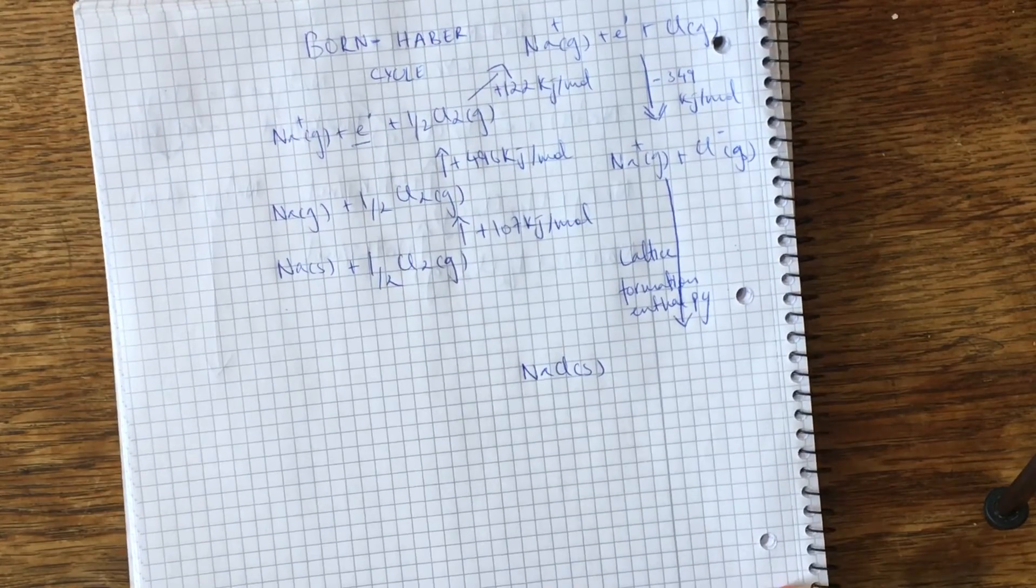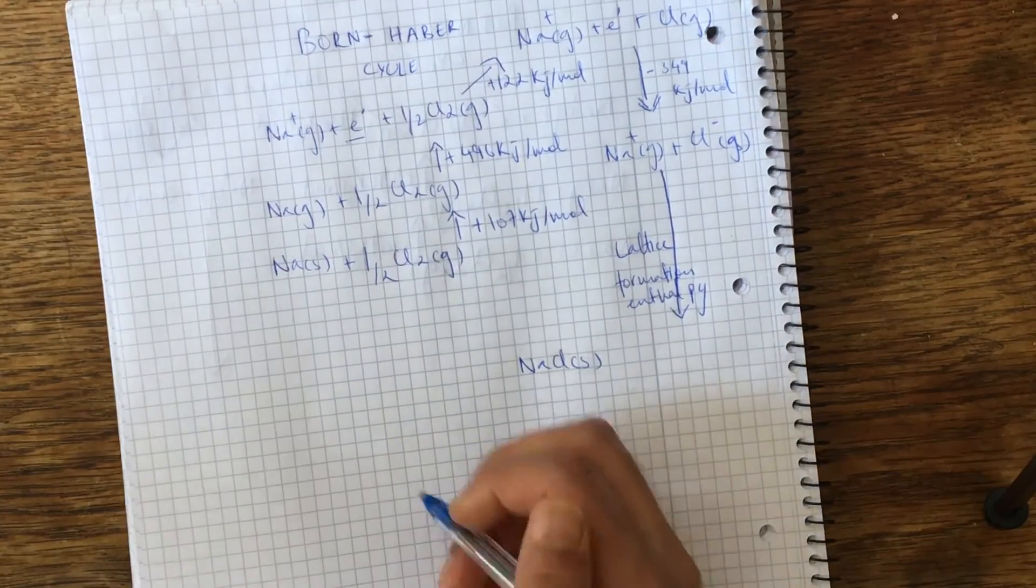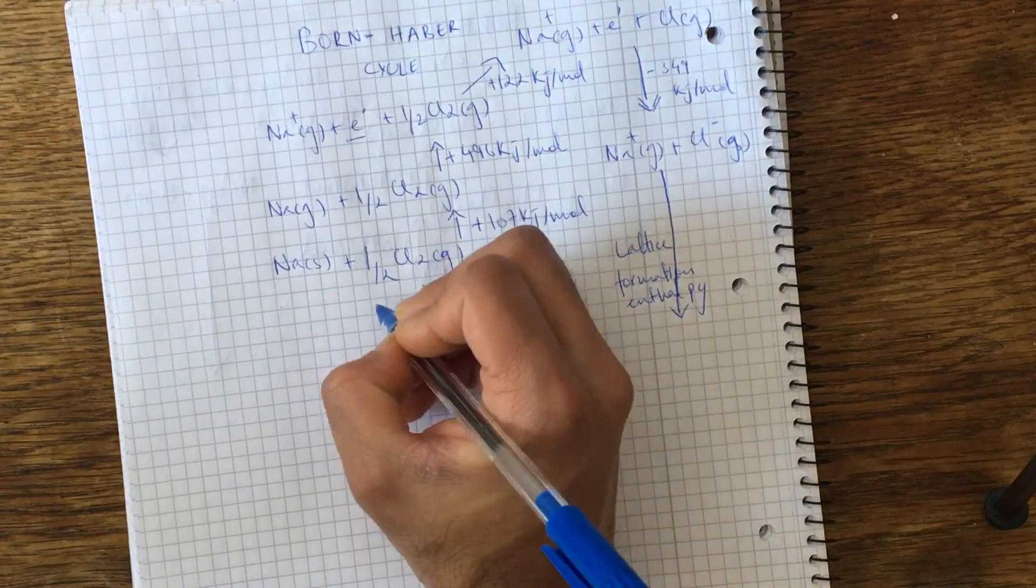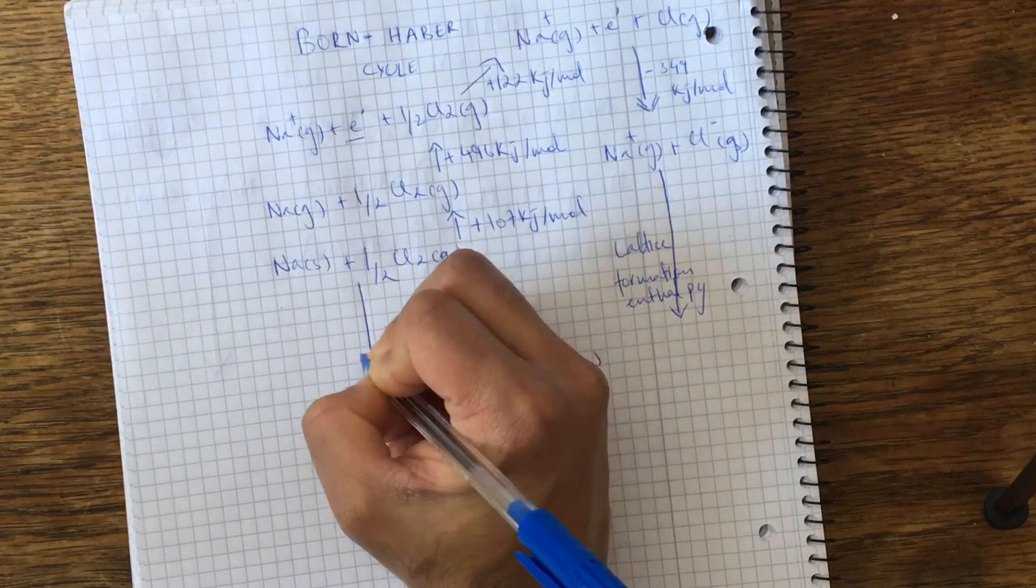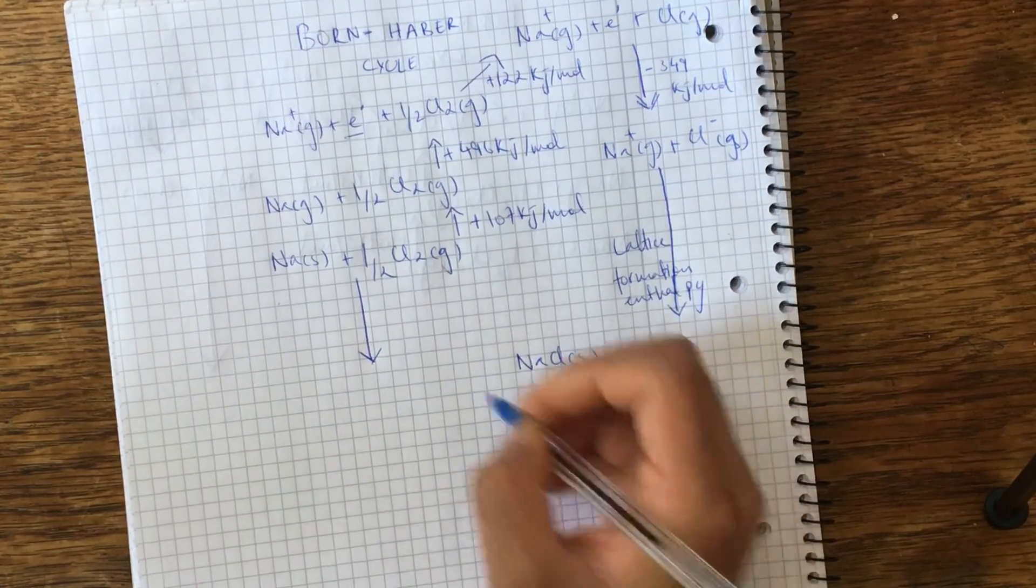So basically, when the examiner does ask you to find out the lattice formation enthalpy, the enthalpy of formation rather will be given.